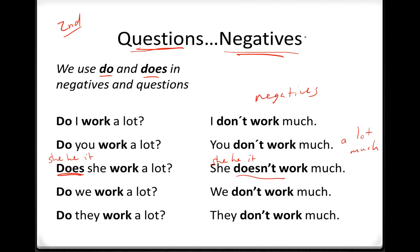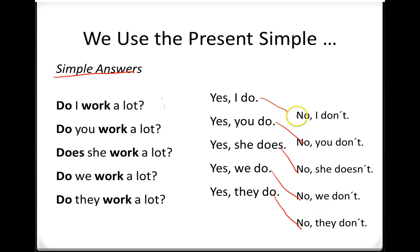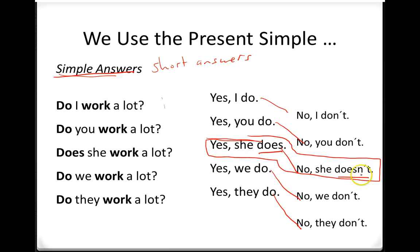So these are questions and negatives. We have one last thing: simple answers. Do I work a lot? Yes, I do. No, I don't. Do you work a lot? Yes, you do. No, you don't. Yes, she does. No, she doesn't. Yes, we do. No, we don't. Yes, they do. No, they don't. These are called simple answers or short answers. Do you play tennis? Yes, I do. Do you play soccer? No, I don't. Notice that he, she, it is the only one that's different: yes, she does. No, she doesn't. Do they like fish? Yes, they do. No, they don't.